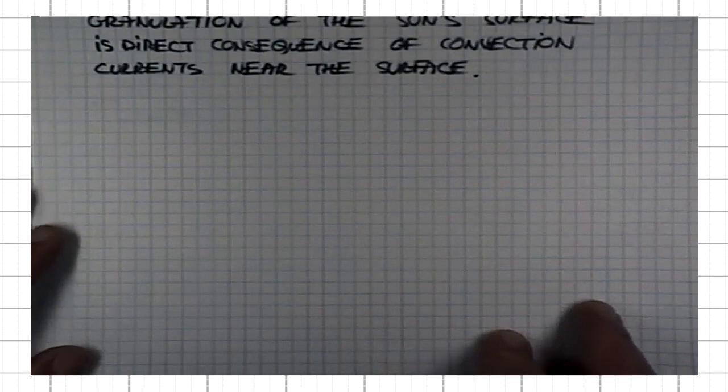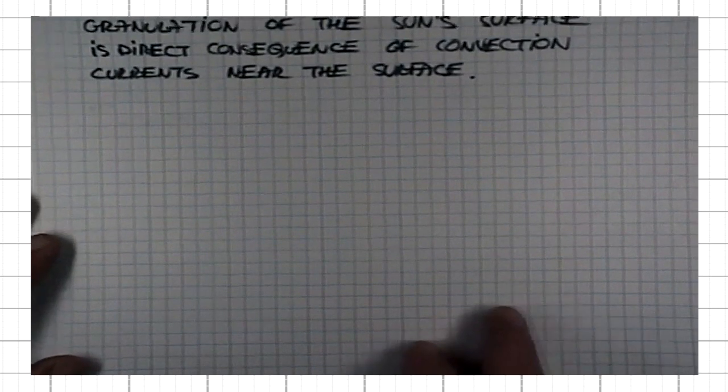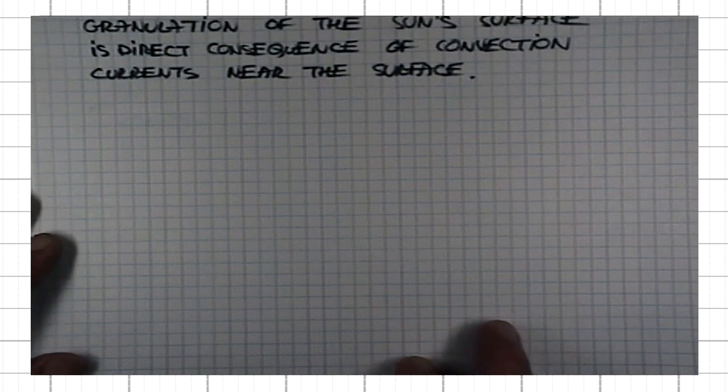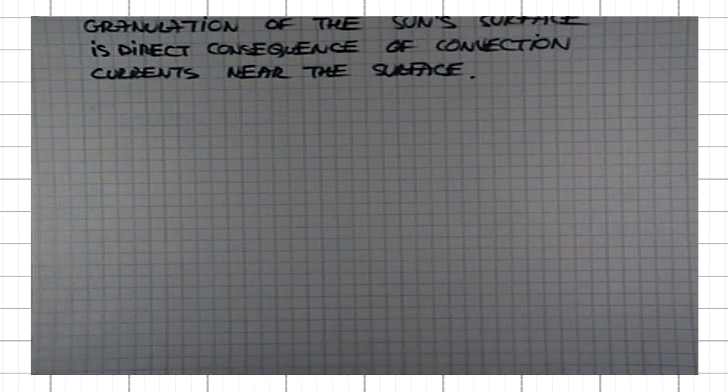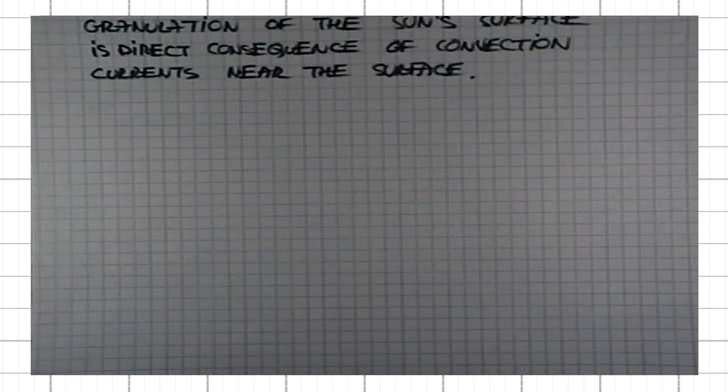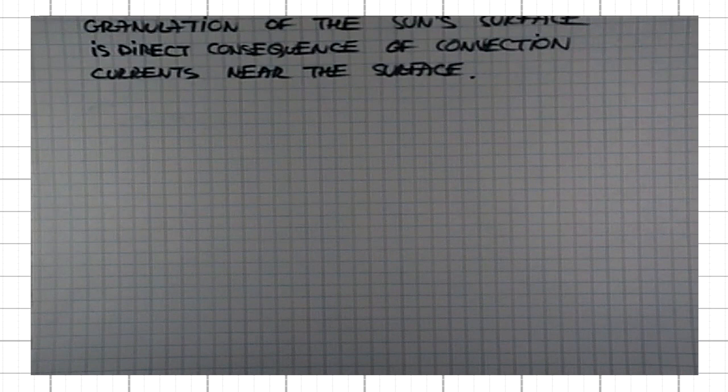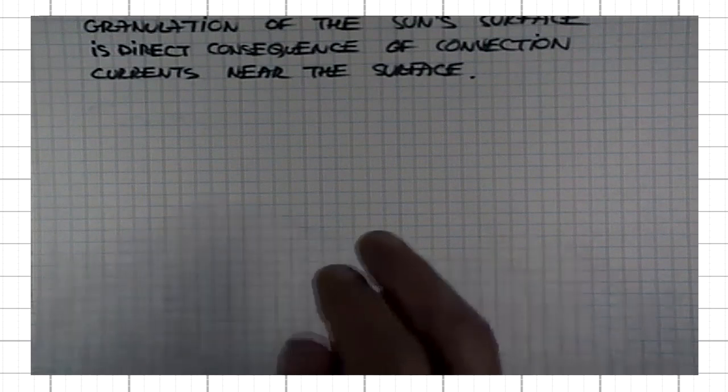There is a field in solar physics called helioseismology that actually enables one to peek inside and profile the temperature, the density, and the pressure within the sun.